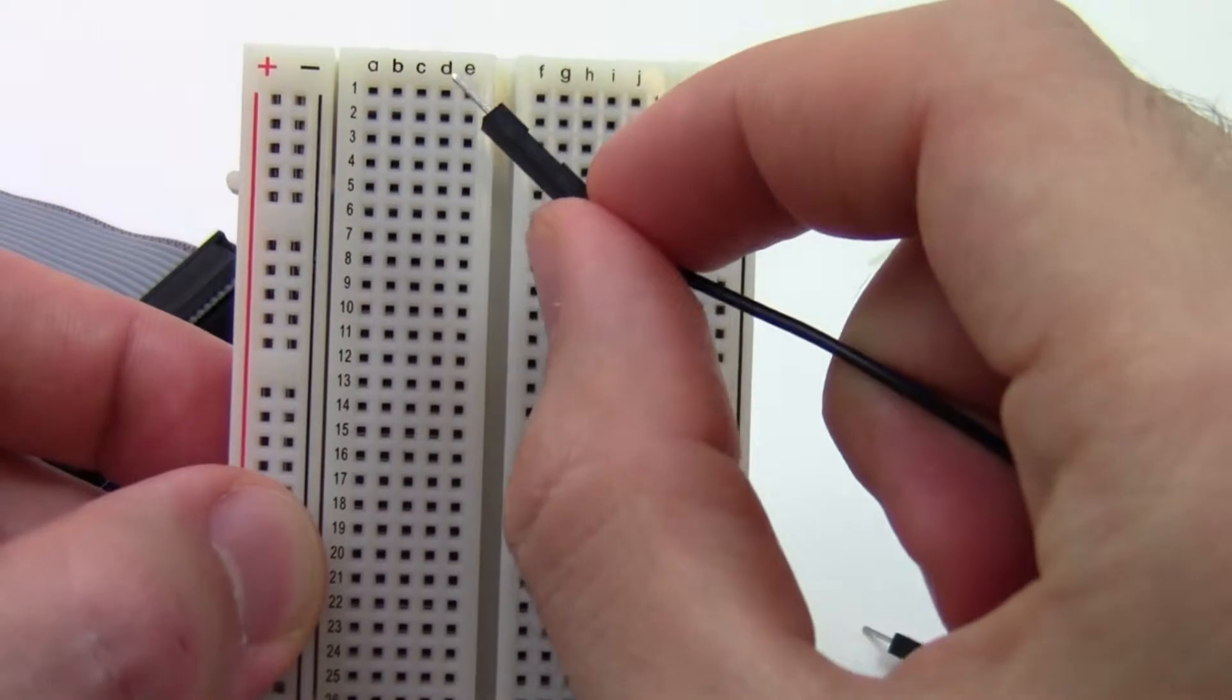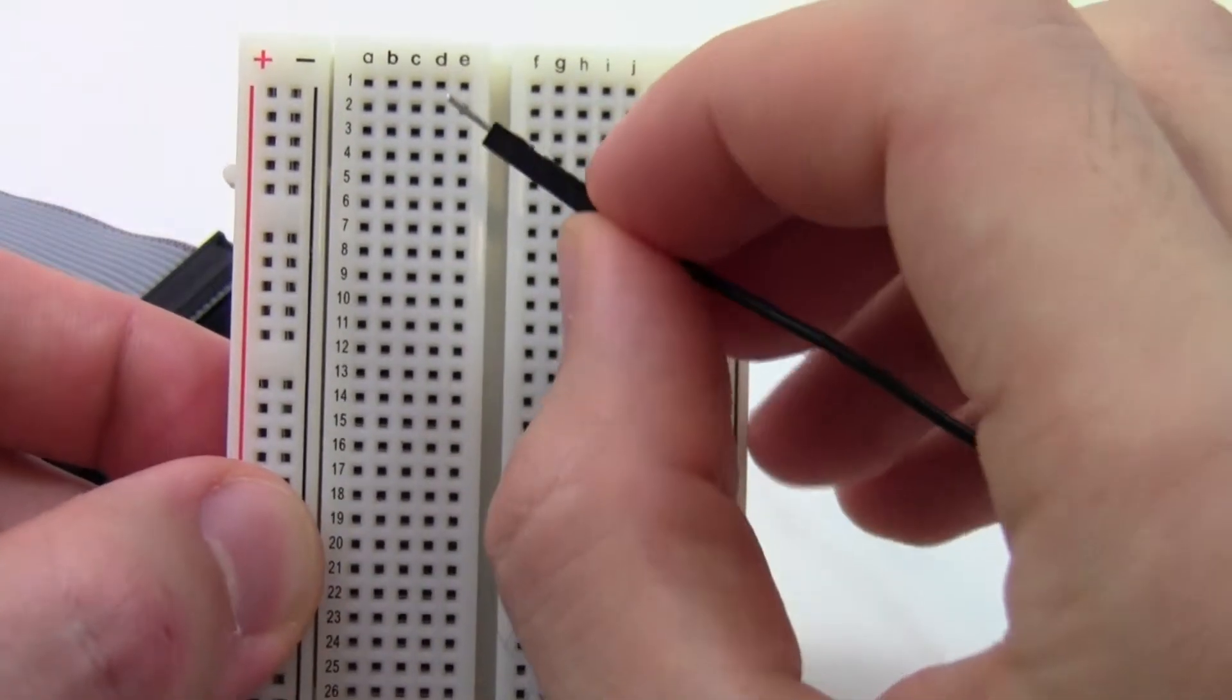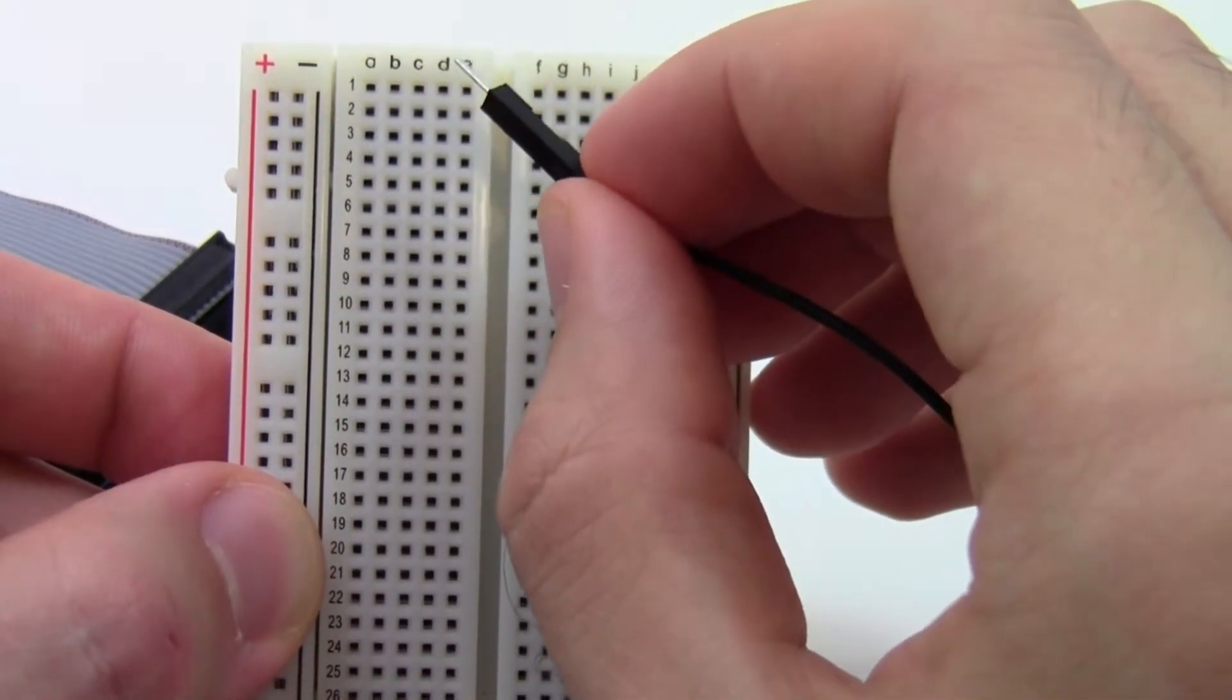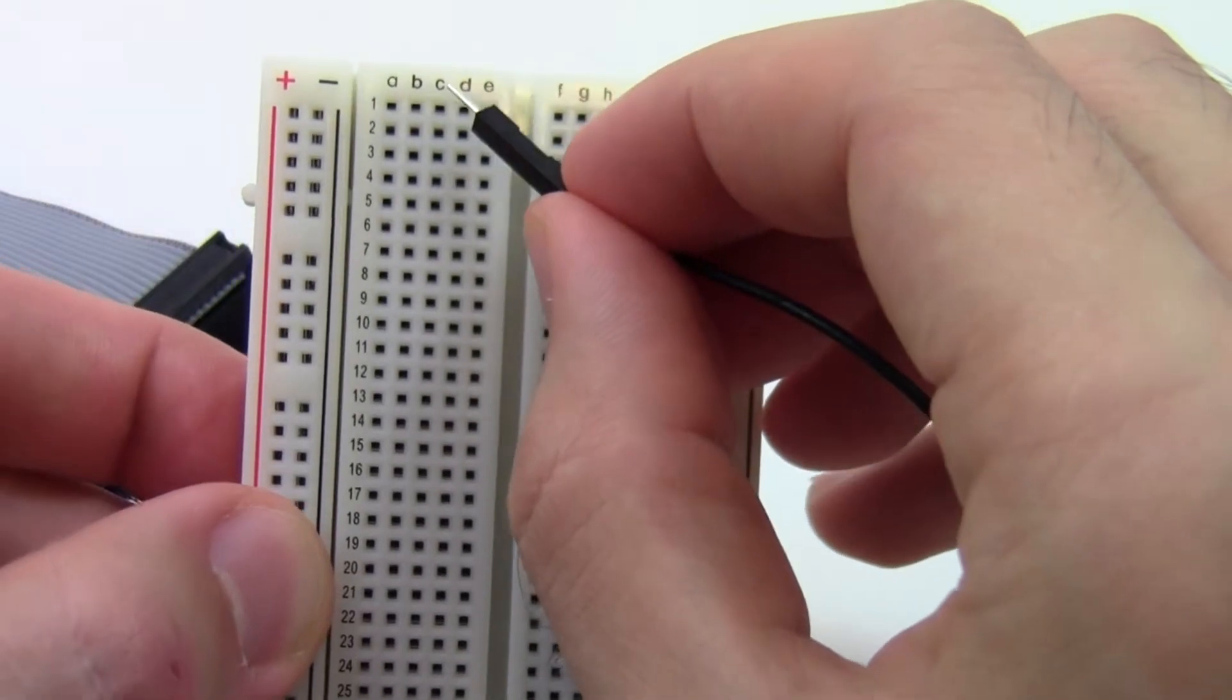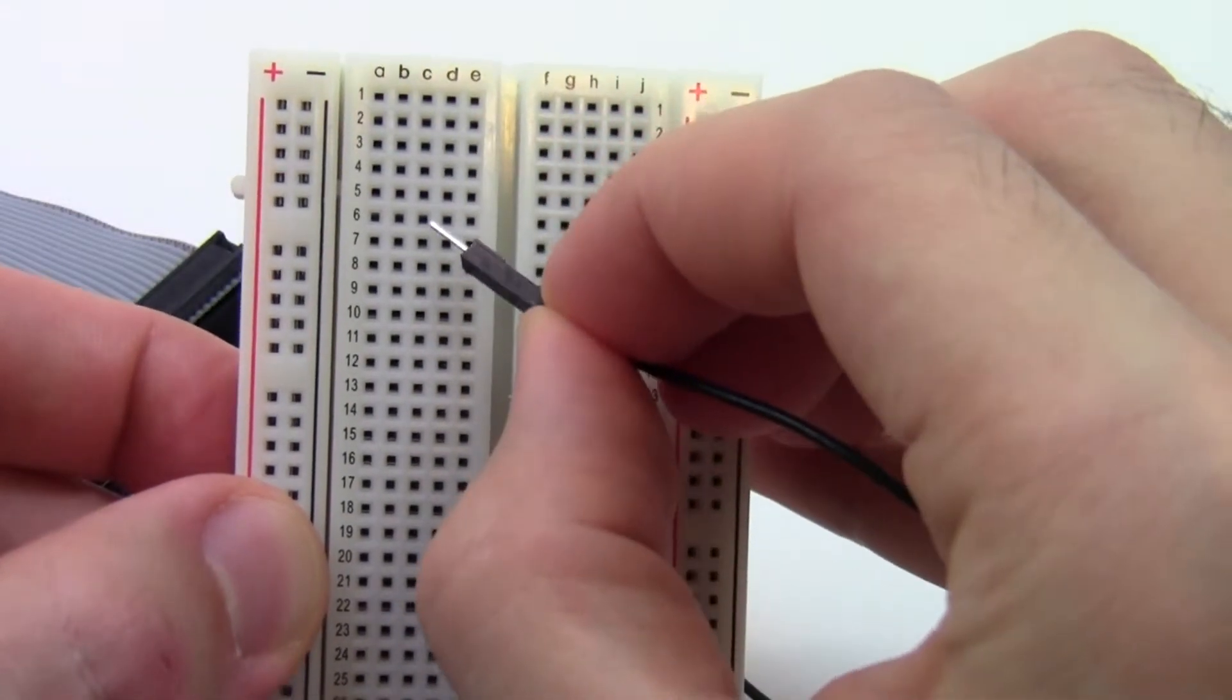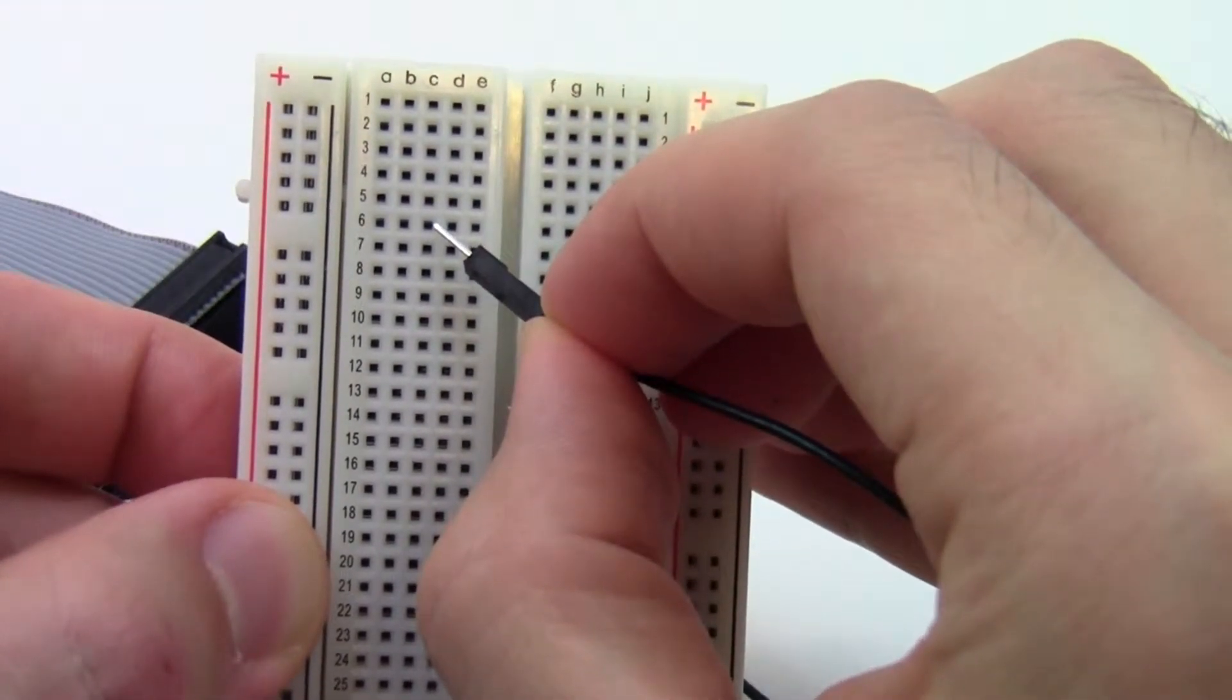You can use this grid system to identify the location of a single hole. For example, if I say hole C6, I know I go to column C and go down to row 6, and that is this hole C6.